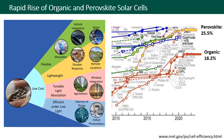Organic and perovskite solar cells are promising for a wide range of applications beyond solar farms because of their potential for low-cost processing from solution, their mechanical flexibility, lightweight, tunable light absorption, and efficiency under low light. These attributes make organic and perovskite solar cells candidates for indoor light harvesting, disaster response, window integration, and other novel applications.